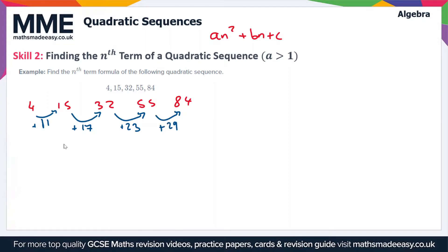Once again, as we did in the first video, we're going to find the secondary differences here, so that's the differences between the differences. So from plus 11 to plus 17 is a difference of plus 6, then from 17 to 23 is plus 6 again, and we get plus 6 again for this last part here.